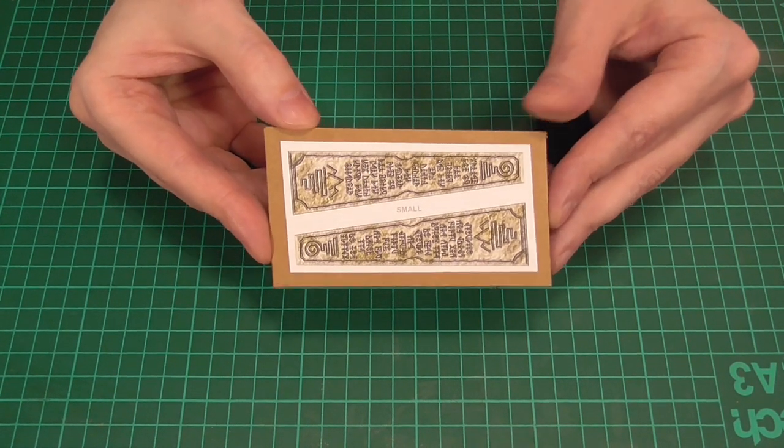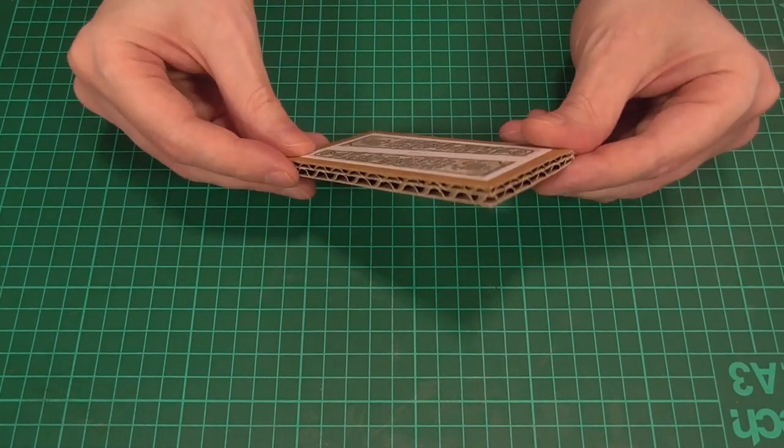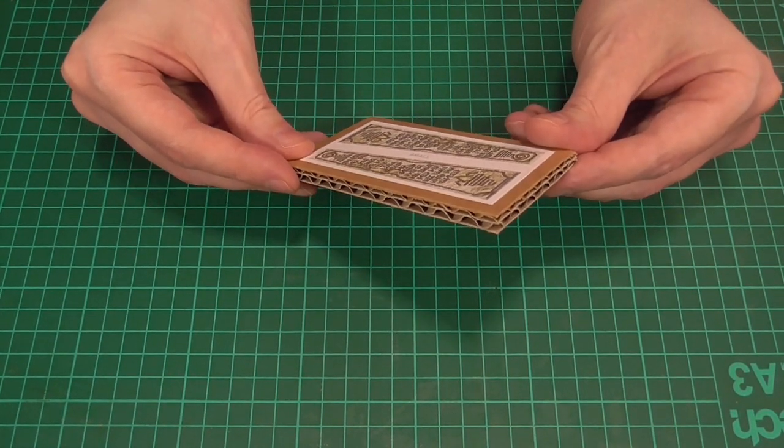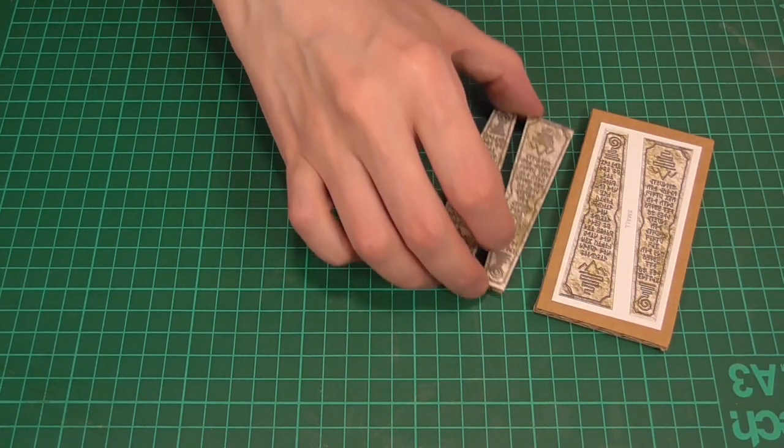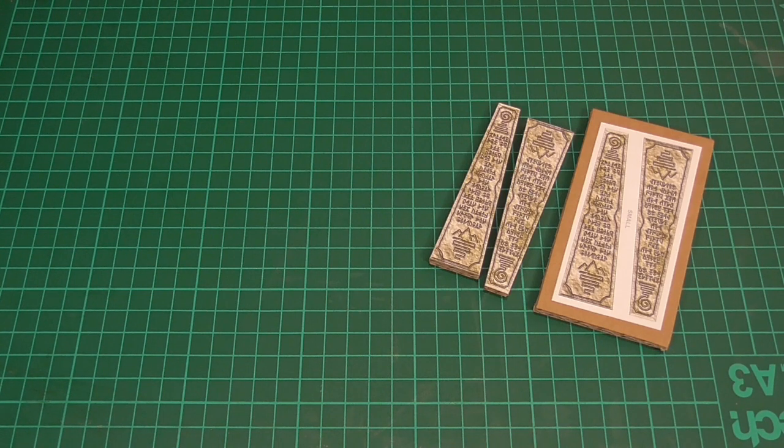Okay then, the first thing we'll need to do is glue the small sides of the obelisk to some double corrugated cardboard. As you can see I've glued them at a 45 degree angle to the corrugation itself so that when we cut them out we get a strong corrugated edge on all four sides.